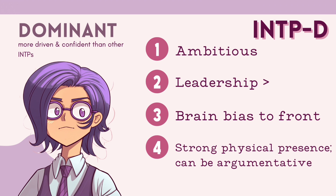The first subtype is the dominant INTP, named the ambitious strategist, who tends to be more driven and confident compared to other INTPs. The dominant INTP is comfortable in a managerial role or front-facing leadership position. They may explore entrepreneurship, but most likely prefer to be in an organization that aligns with their values and handles the execution of small details. The neurological patterns observed show a bias toward the front of the brain and the left hemisphere, relying on brain regions active for speaking, listening, and language-based reasoning.